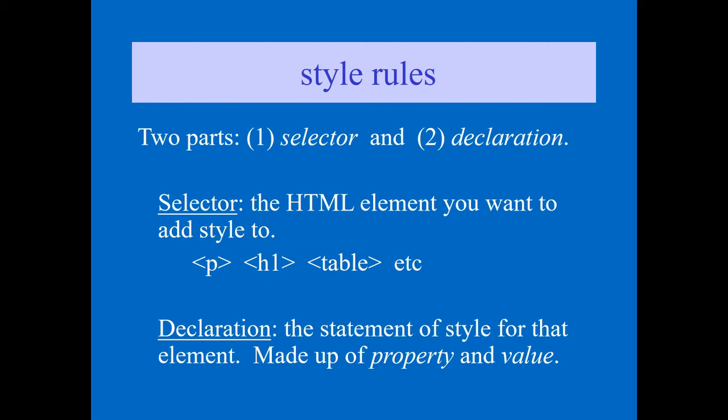The selector is the HTML element where you want to add the style — paragraph, h1, table, or any HTML element where you want to add the style. Declaration is the statement of a style, meaning what rule you want to follow for that selector. Declaration is made up of property and value.